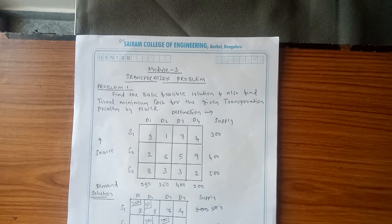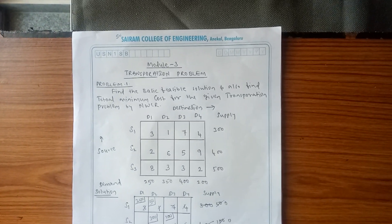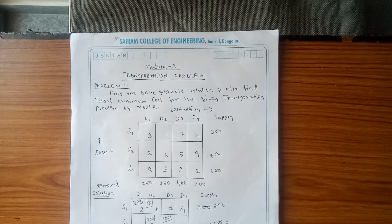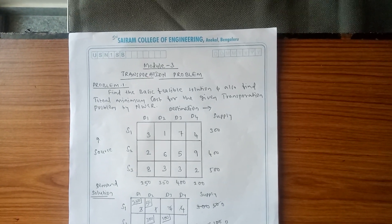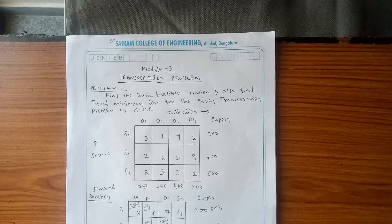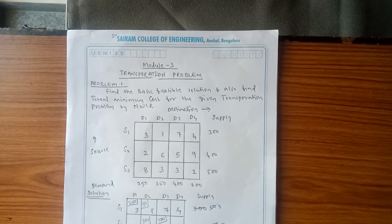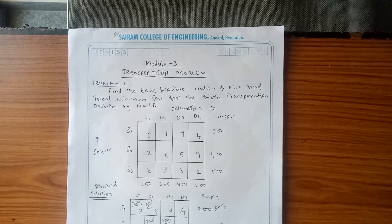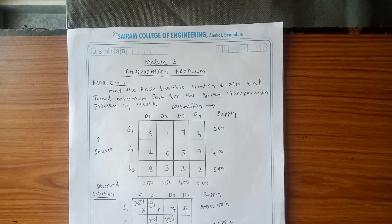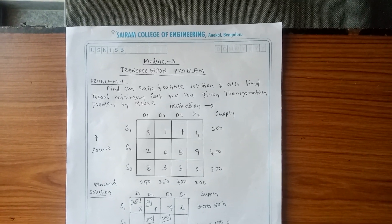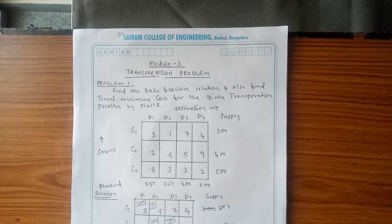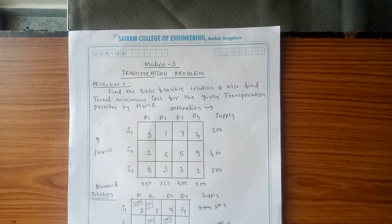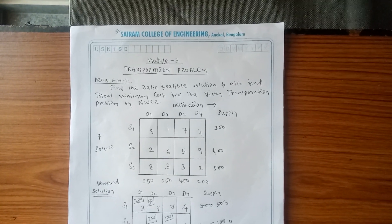This transportation problem can be solved by four methods. The first method is Northwest Corner Rule. The second method is LCM, that is the Least Cost Approximation Method. The third method is Vogel's Approximation Method, and the last one is the Modified Distribution Method.